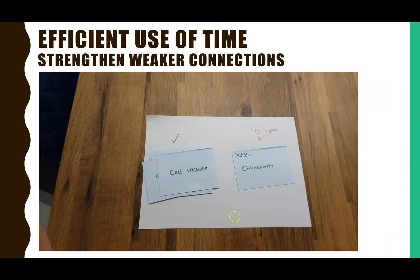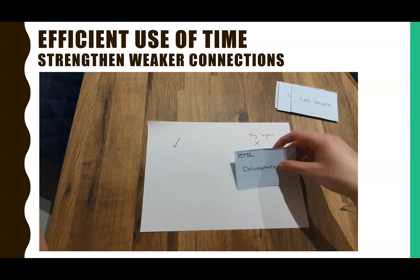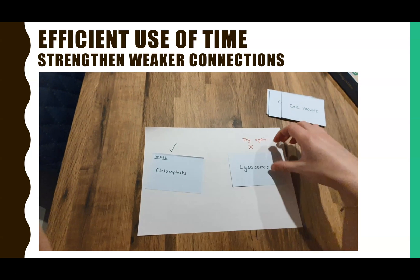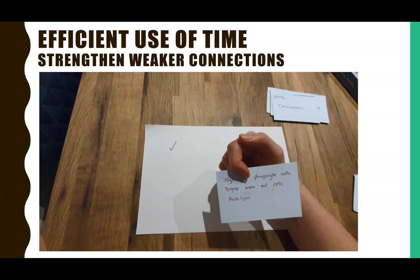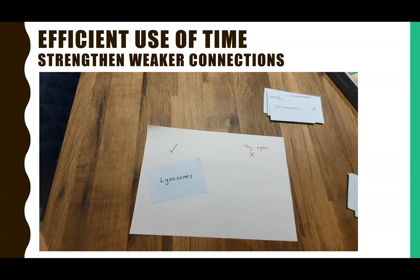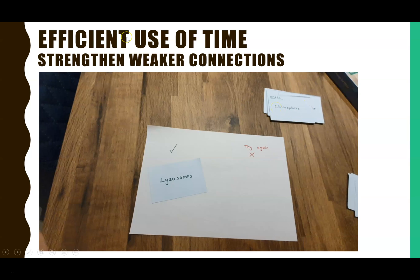Once you've sorted the pack, go through it again — you don't need to redo the tick cards just yet. Try the cross cards again: now I remember chloroplast, but I still can't remember lysosomes, so chloroplast moves on and I have to redo lysosomes. This is the Leitner system. You can also label cards 'daily,' 'twice a week,' or 'once a week' — cards you couldn't remember get tested daily, ones you could remember only once a week — being efficient with your time and strengthening weaker connections.